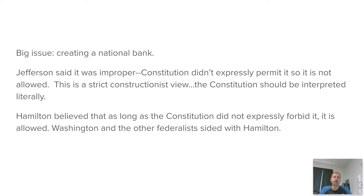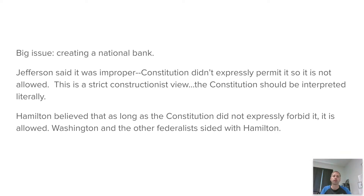One big topic was the creation of a national bank. If you were to take out the Constitution and look in it, you couldn't find where it says the federal government has the power to create a national bank — it's not in there. Alexander Hamilton said, as long as the Constitution doesn't forbid it, the federal government can do it. Thomas Jefferson said no. Jefferson was a strict constructionist — if it doesn't say it in here, it's not allowed. And so we had this disagreement between the Federalists and the Democrat-Republicans, the Washingtonians versus the Jeffersonians.